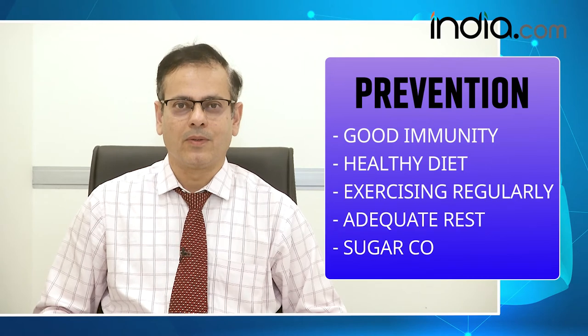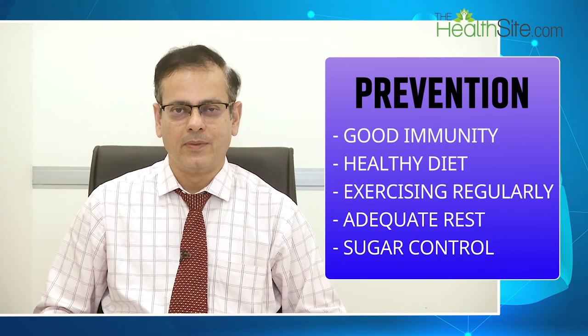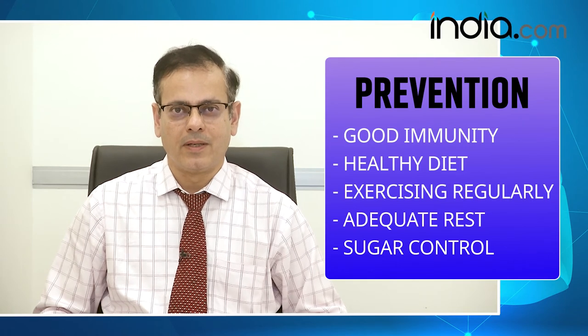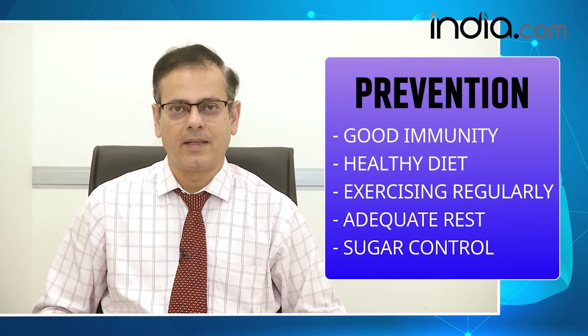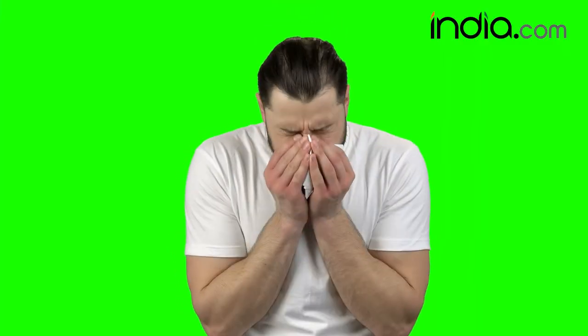Prevention is obviously more important than cure. The basic prevention is to have good immunity — so even though the bacteria may be inside your body, it will not trouble you. Good immunity comes from having a nutritious diet, adequate rest, and exercising regularly. If the patient has any immunosuppression like diabetes, liver, or kidney problems, they should maintain good control of that disease and good control of sugar, so that immunity does not get low. Persons at most risk are young children or elderly patients, as they have intrinsic low immunity.